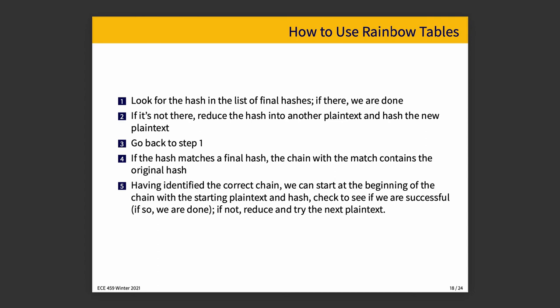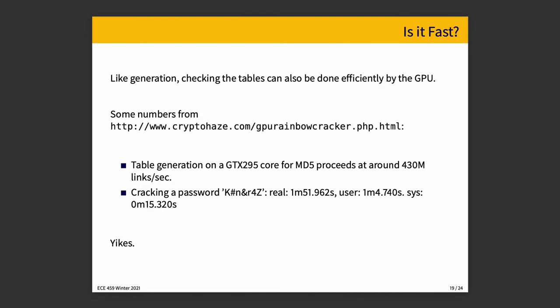Obviously, depending on the length of N and the size of the problem space, it's still a very large problem and you're not going to get an answer in two seconds, just because you've applied a rainbow table. But by working smarter and using pre-computed information — or even better, someone has pre-computed it for us — we can turn a problem that is basically intractable into one we could plausibly solve in a fixed amount of time. Generation and checking of the rainbow tables can also be done very efficiently by the GPU.